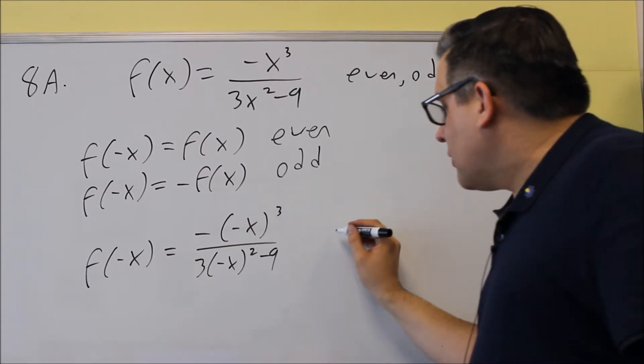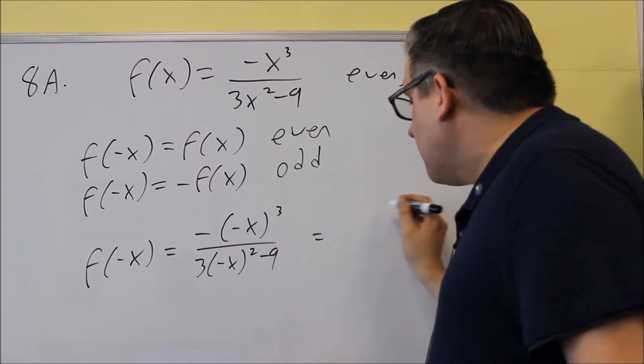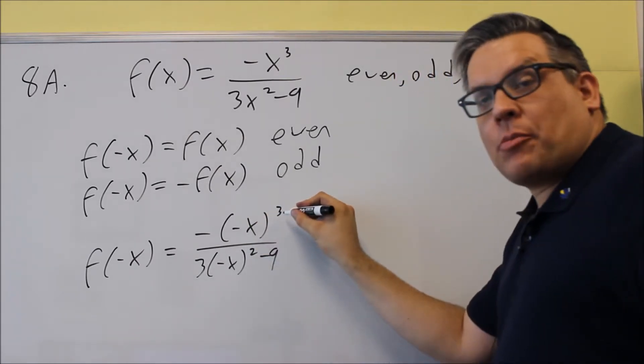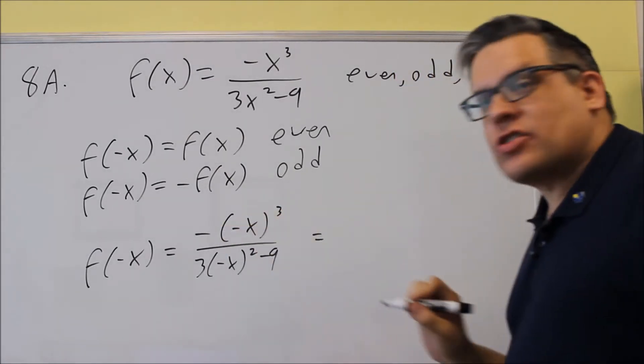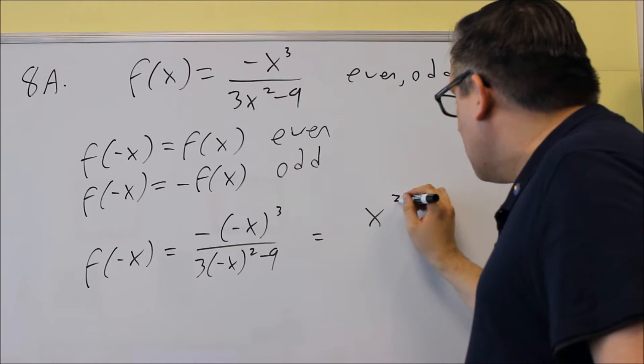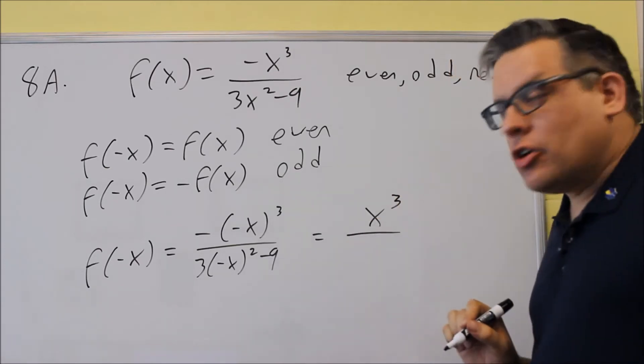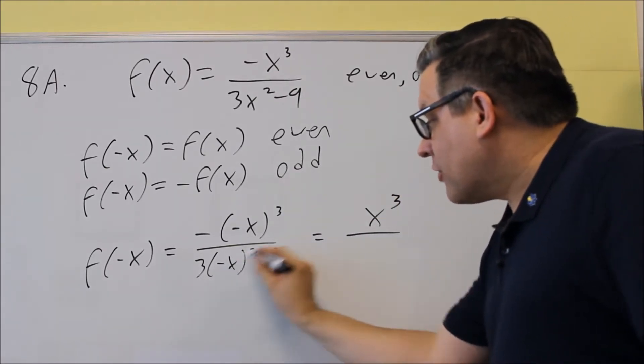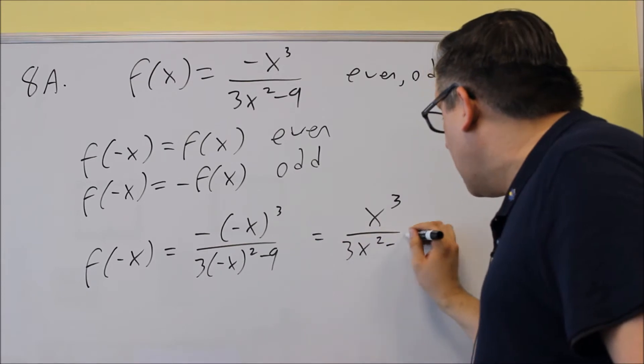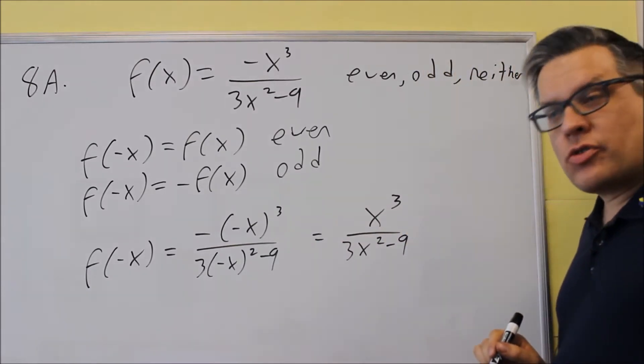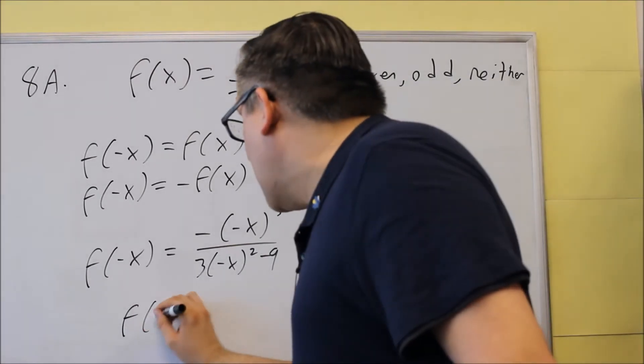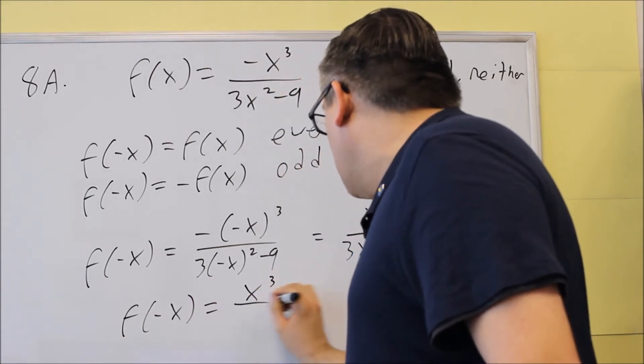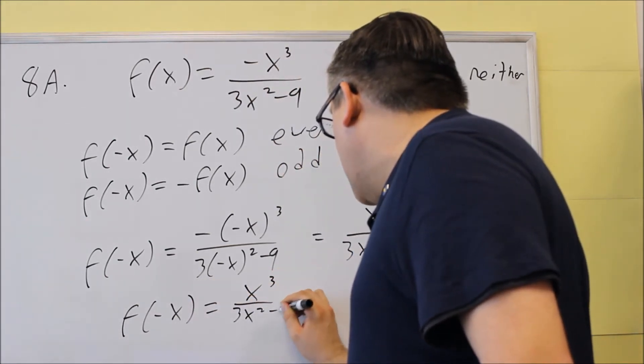And let's simplify it. So, that means that I get, okay, now negative is going to come out because of the cube here, so that's going to change that sign to a positive. So, I get positive x cubed on the bottom, negative squared, that's actually going to go away and I just get this as a result. So, what I got was f of negative x is equal to x cubed over 3x squared minus 9.